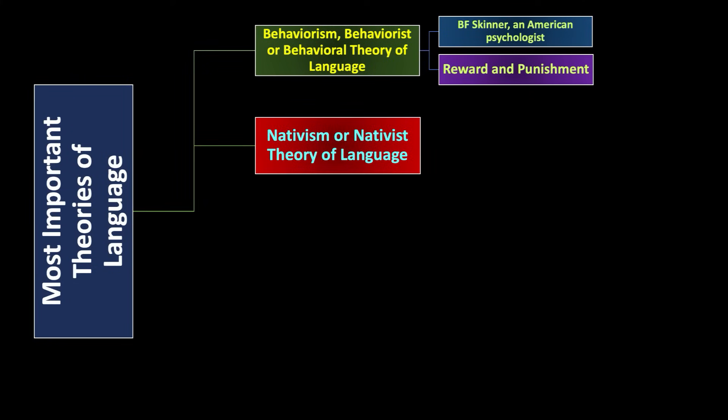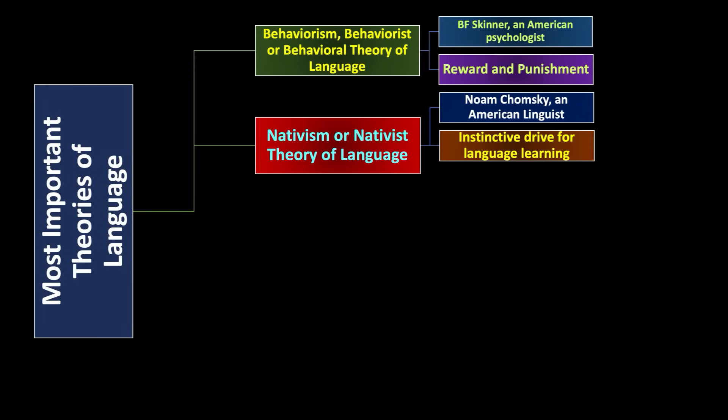The second theory is nativism, or the nativist theory of language. The person who talked about this theory is Noam Chomsky, an American linguist. The most important elements in this theory are the instinctive drive for language — children have an innate ability and capability to learn a language. Another key element is the LAD, the Language Acquisition Device, which exists somewhere in the human brain and helps us learn language.